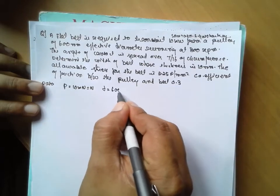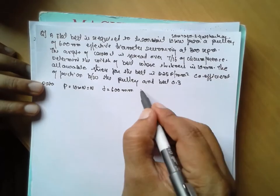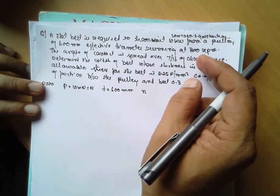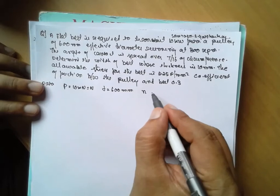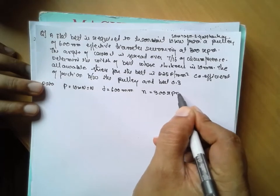Running at 300 rpm. N is given, we don't know either it is a larger pulley or smaller pulley, just write it as N is equal to 300 rpm.